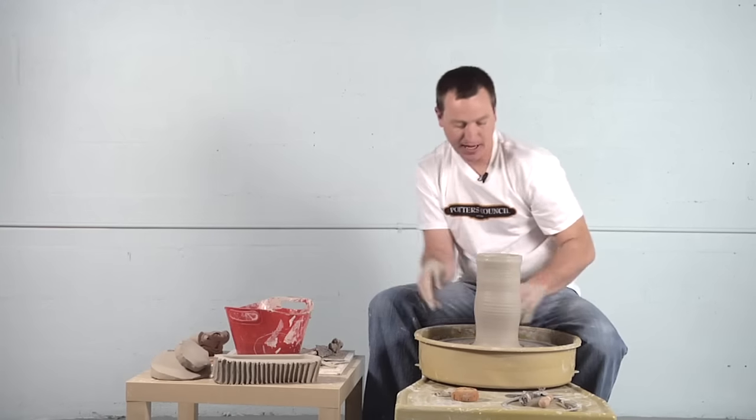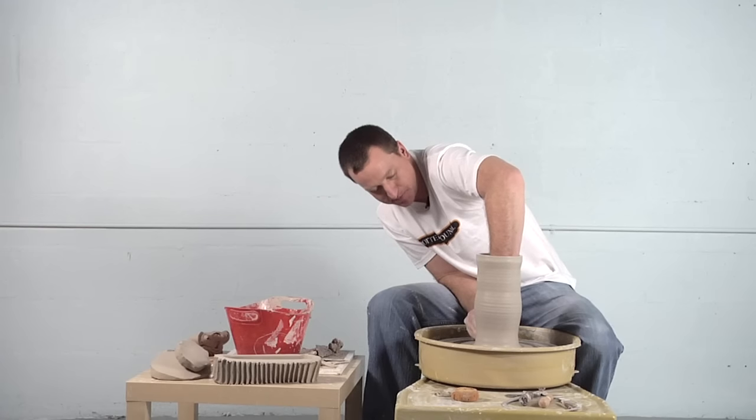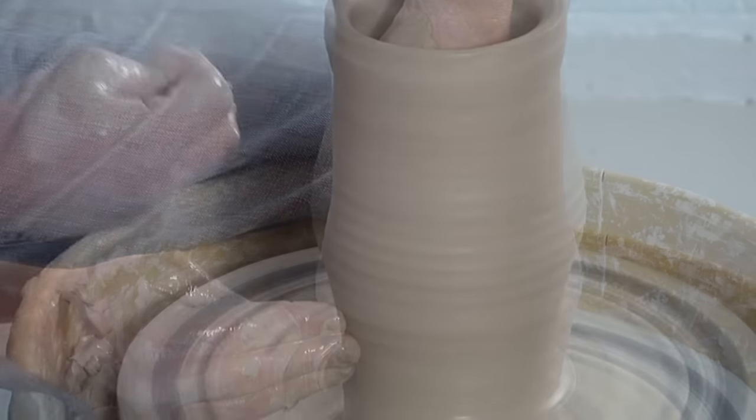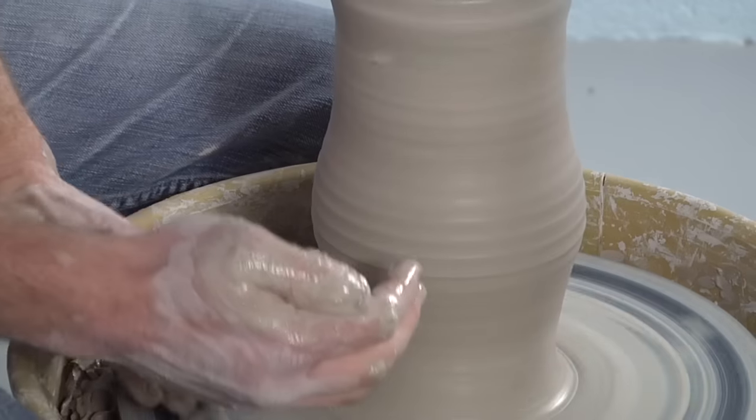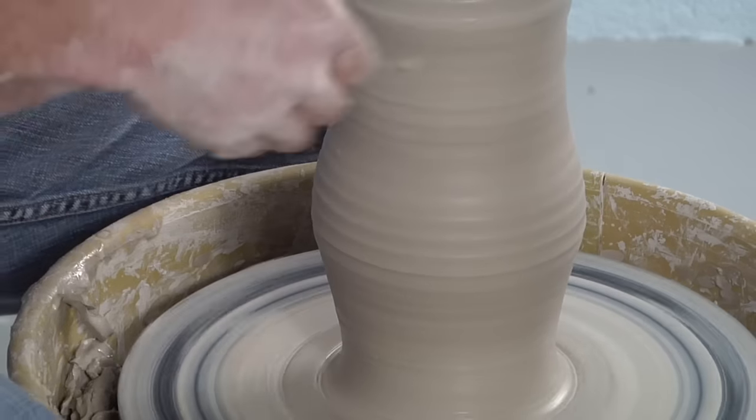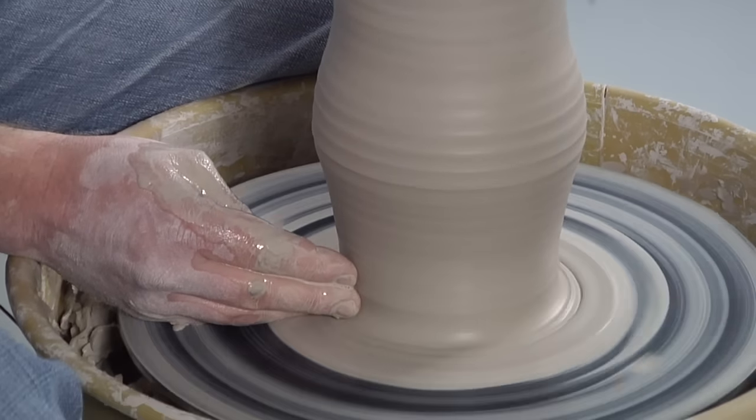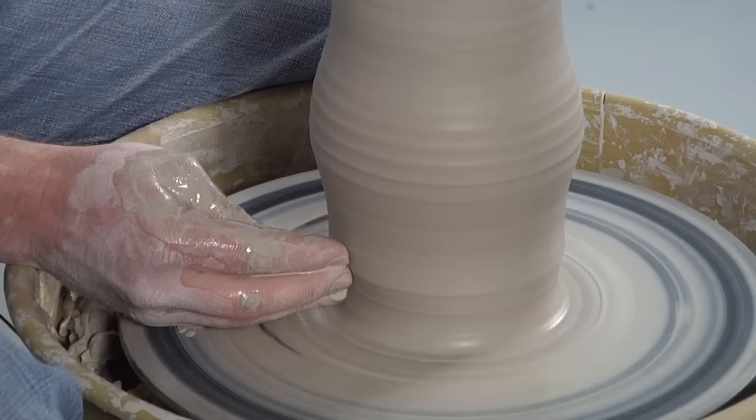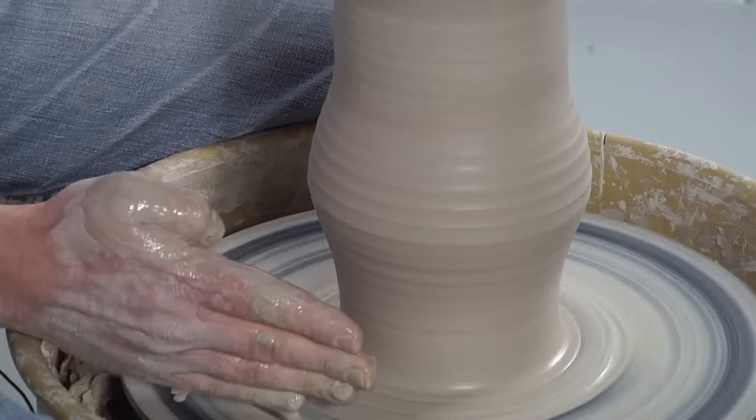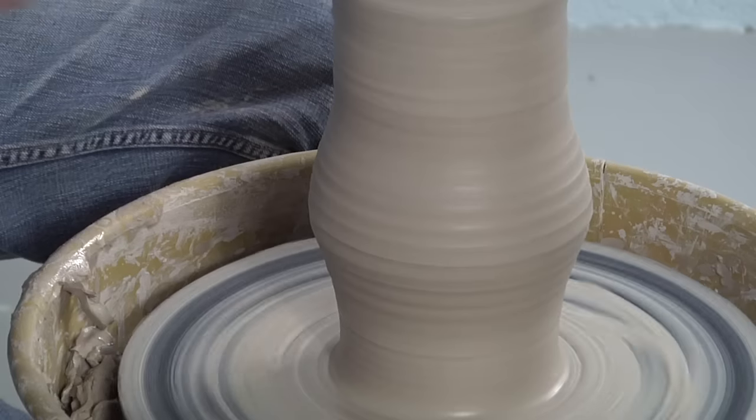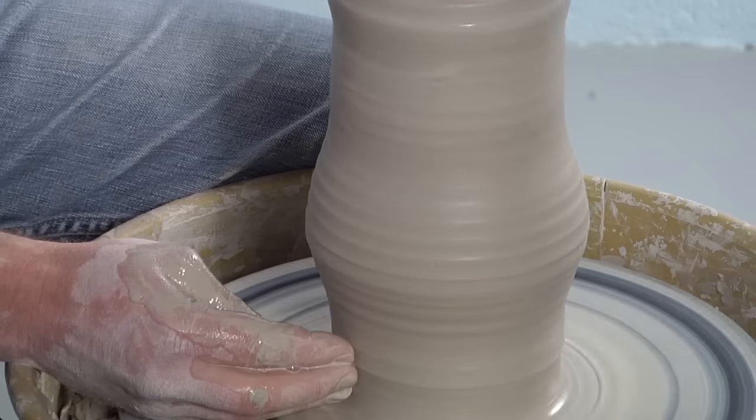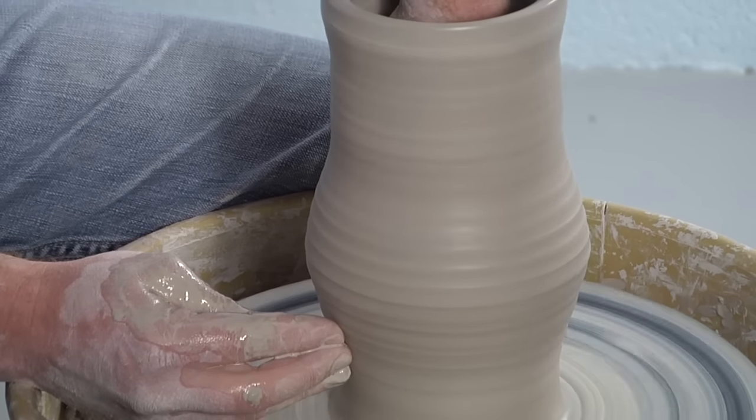Once the piece gets thinned out and achieves the height I'm looking for, I start to belly out on the bottom of the form. But I'm going to be conscious about how much I push out on the bottom because when I push out on the inside after the form is thrown, it can have a tendency to collapse if I push out too much. So the form generally comes straight up then flares out instead of flaring out at the very base of the form.